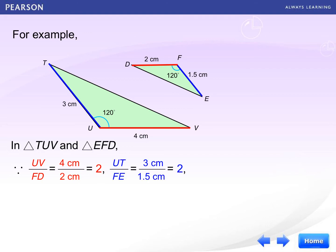Meanwhile, we should also find the ratio of another pair. That means this pair UT and FE. And the ratio is 3 over 1.5 equals to 2. Also, the included angles of the two sides of each triangle is 120 degrees. That means angle U is equal to angle F.